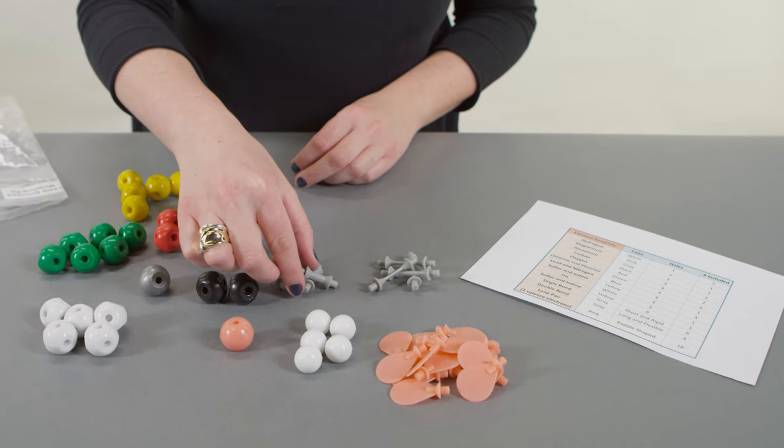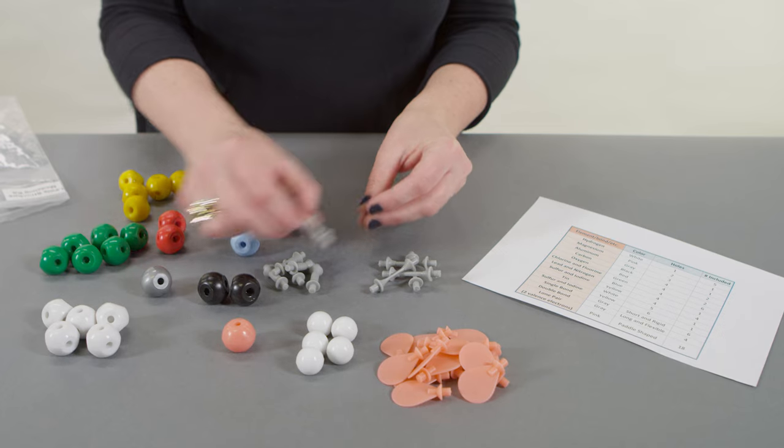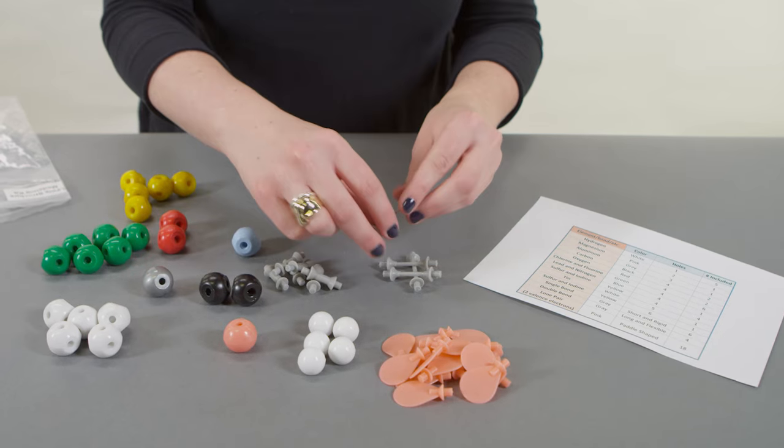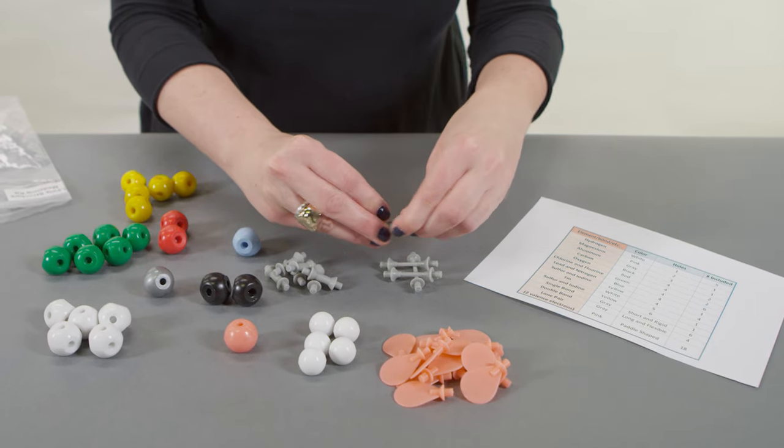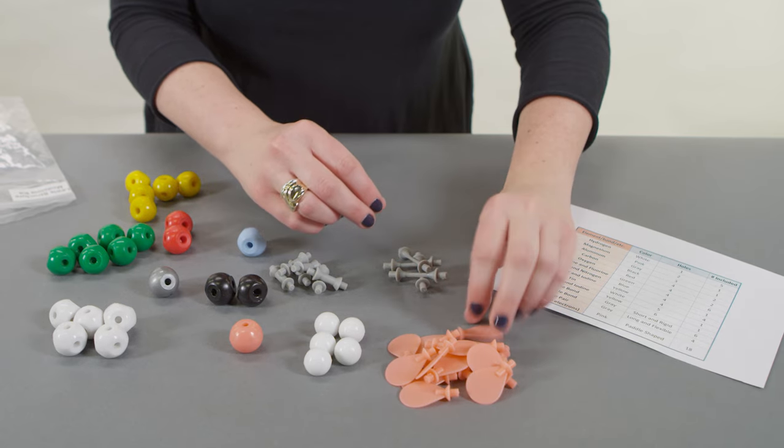The short and rigid piece represents a single bond. The long and flexible piece represents a double bond. And the pink paddle-shaped piece represents lone pairs.